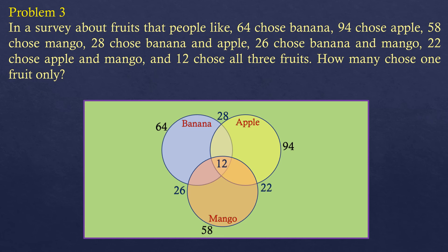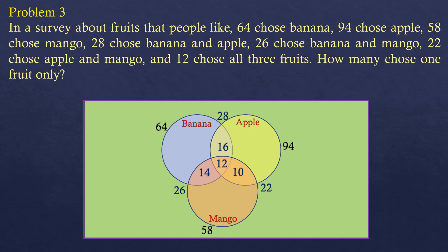Now we compute those who like banana and apple but not mango: 28 minus 12 equals 16. Then those who like apple and mango but not banana: 22 minus 12 equals 10. Then banana and mango but not apple: 26 minus 12 equals 14. So there are 16 who like banana and apple only, 10 who like apple and mango only, and 14 who like banana and mango only.